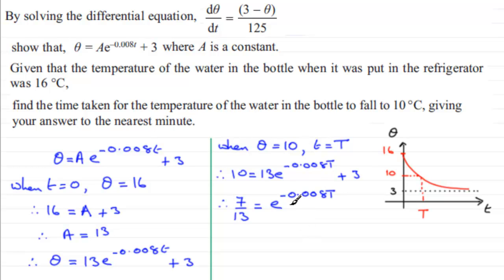And if I take natural logs to both sides, I'm going to have minus 0.008T equals the natural log of 7 over 13. And to get T, all I've got to do is to divide both sides by negative 0.008. So T would equal minus 1 divided by 0.008, and that's multiplied by the natural log of 7 over 13.